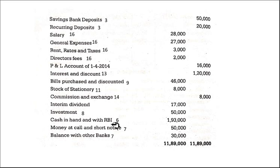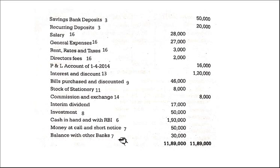Cash in hand and with RBI — same thing, cash and balances with RBI, Schedule 6. Then money at call and short notice — on the asset side we have to write this under Schedule 7. Balance with other banks — balances with banks and money at call and short notice, Schedule 7. So all these things are under one schedule heading.